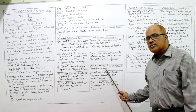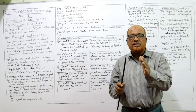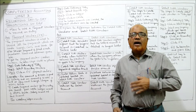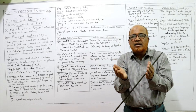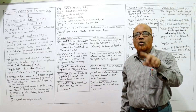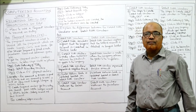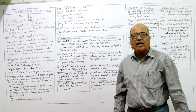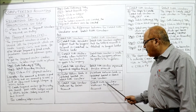The sales return book is updated based on the credit note voucher. As the supplier, after raising the credit note voucher, I will update my sales return book. Similarly, the buyer will update the purchase return book on the basis of the debit note voucher, adjusting entries in the purchase return account.